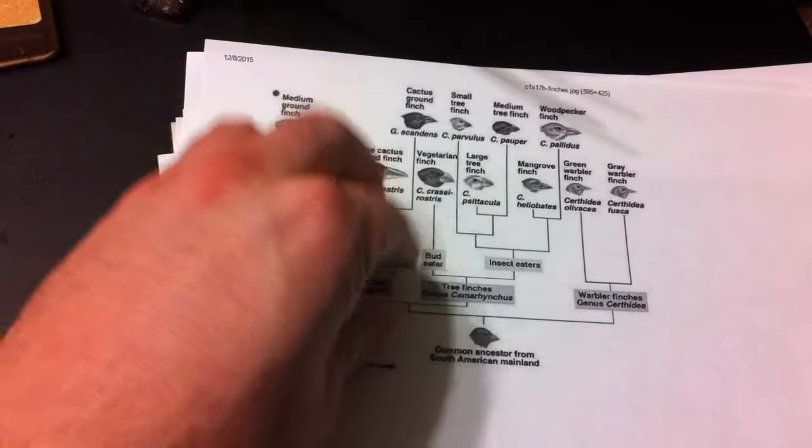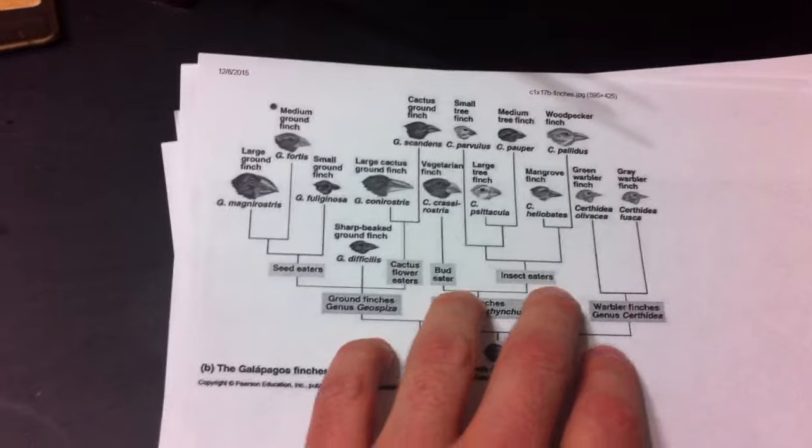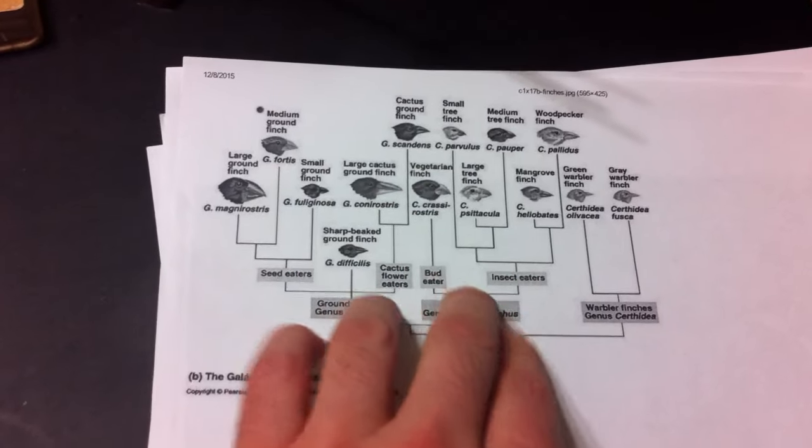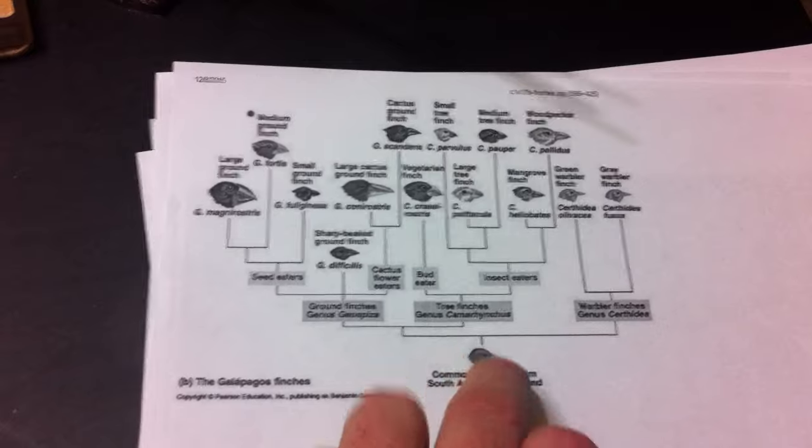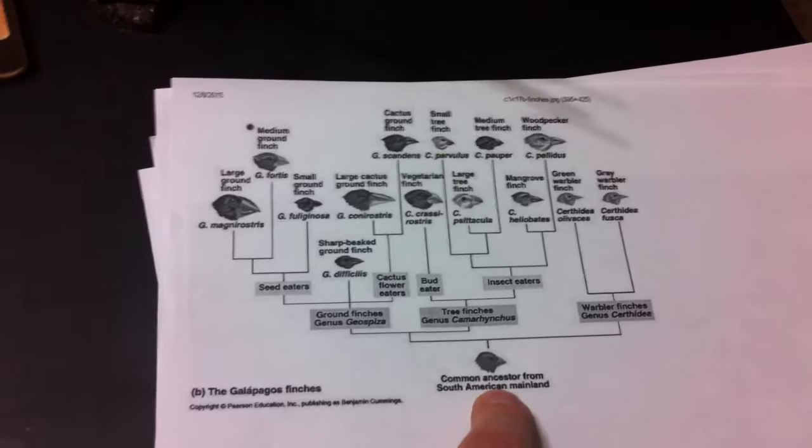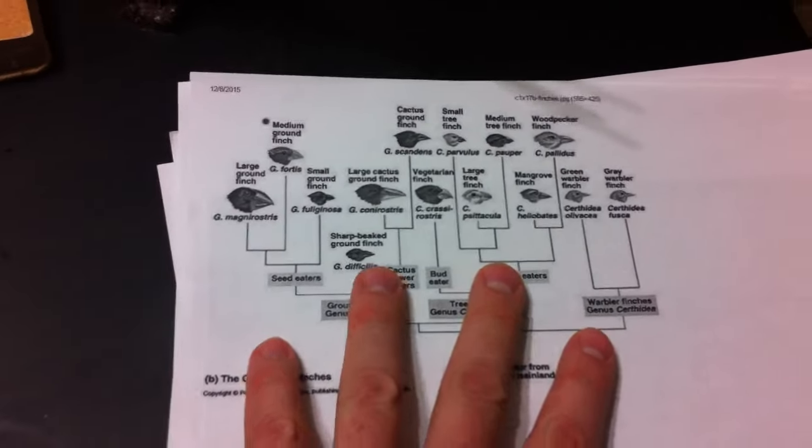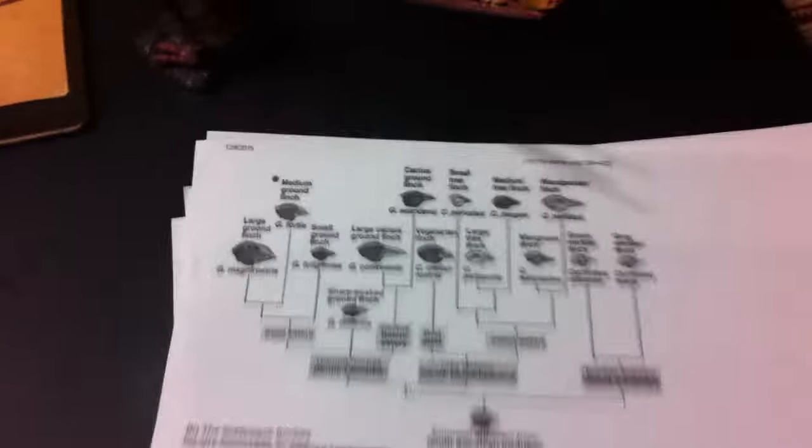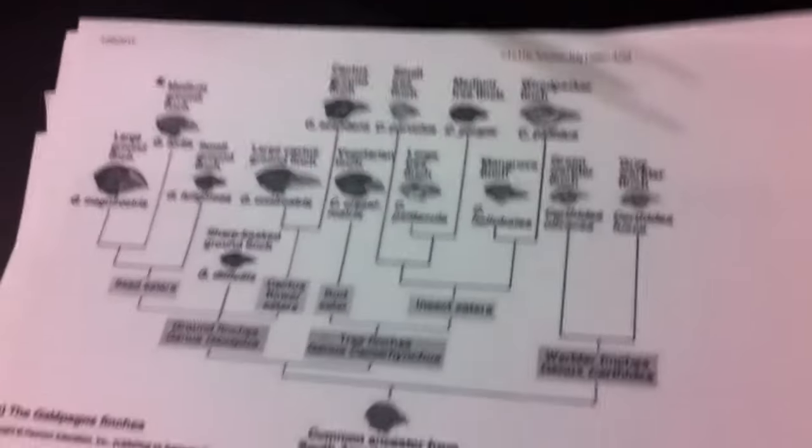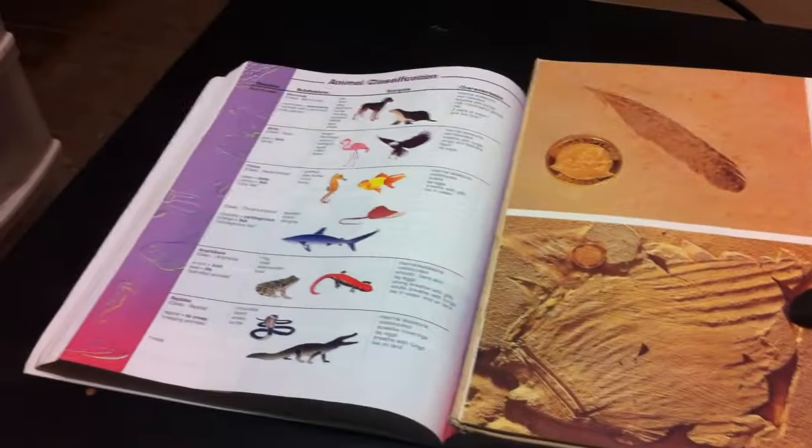And so this kind of gave Darwin an idea. Hey, these things fall into groups within groups and the reason that they do so is because of their ancestry leading back to their common ancestor. So maybe this applies to all living things at every level. Maybe this branching pattern of common ancestry can explain the groupings of organisms.